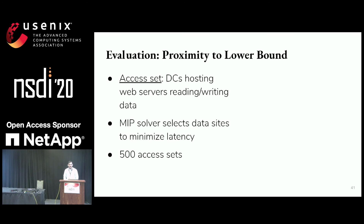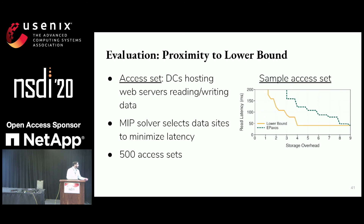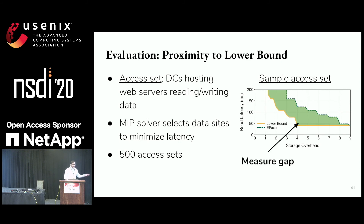Given an access set, we use a solver to determine the best selection of data sites and configuration parameters to minimize latency given constraints on write latency and storage, and compute figures like the ones shown earlier. The volume of the gap between an approach and the lower bound — this is a three-dimensional trade-off — is the metric we use to measure closeness to the lower bound.